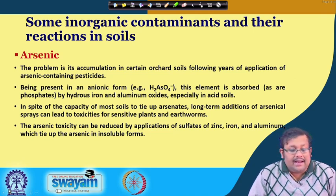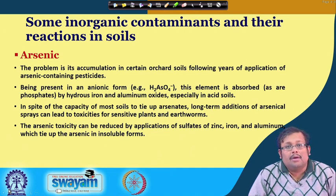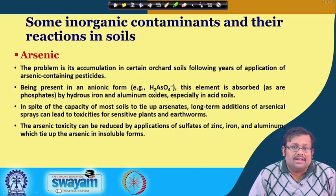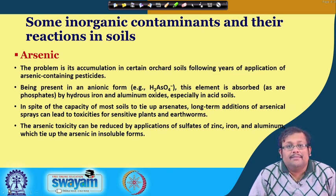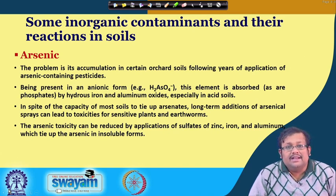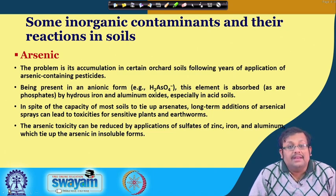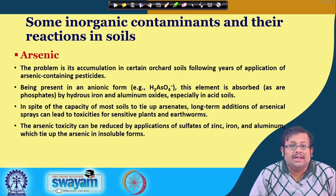We started with arsenic. The problem of arsenic is its accumulation in certain orchard soils following years of application of arsenic-containing pesticides. Being present in anionic form, this element is absorbed by iron and aluminum oxides, especially in acid soils. In spite of the capacity of most soils to tie up arsenic, long-term addition of arsenical sprays can lead to toxicity for sensitive plants and earthworms. Arsenic toxicity can be reduced by application of sulfates or zinc, iron, and aluminum, which tie up arsenic in insoluble forms.